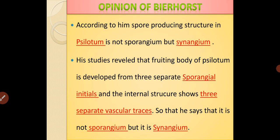According to the opinion of Bearhorst, the spore-producing structure in Silotum is not a sporangium but it is a synangium. His studies revealed that the fruiting body of Silotum is developed from three separate sporangial initials, and the internal structure shows three separate vascular traces, so he concluded that it is not sporangia but synangium.